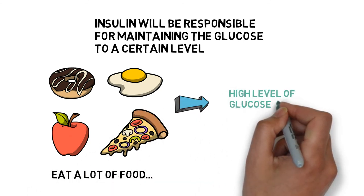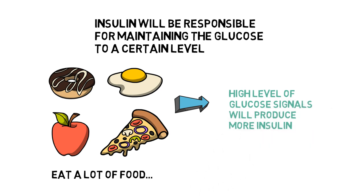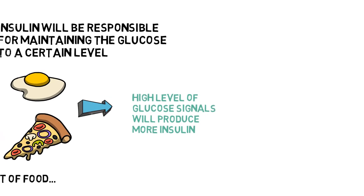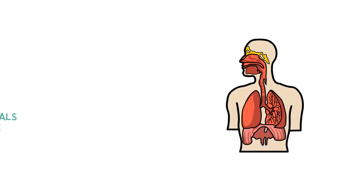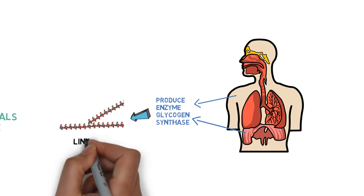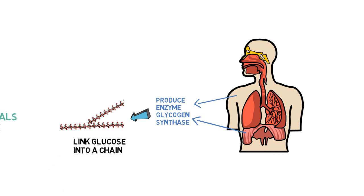When this happens, the high level of glucose signals the pancreas to produce more insulin to help body cells take up glucose from the bloodstream for energy. At the same time, insulin helps liver and muscle cells produce an enzyme called glycogen synthase, which links glucose together into a chain similar to the structure of polysaccharides.